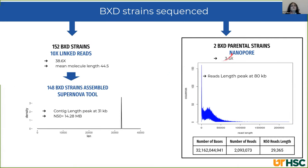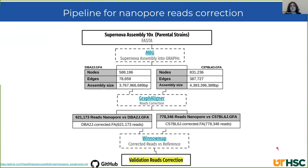We also have two BXD parental strains obtained by nanopore technology. Coverage is very low, but the read length peak is high relative to the contig length peak from 10x. This is the number of bases, reads, and N50. For base calling on this data, we used Guppy. The problem with nanopore data is the very high error rate, and we tried to solve this problem.